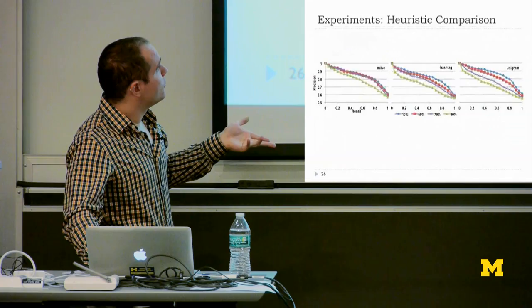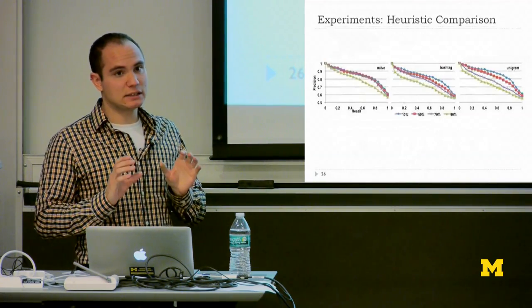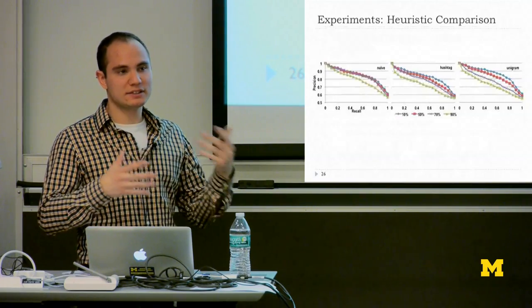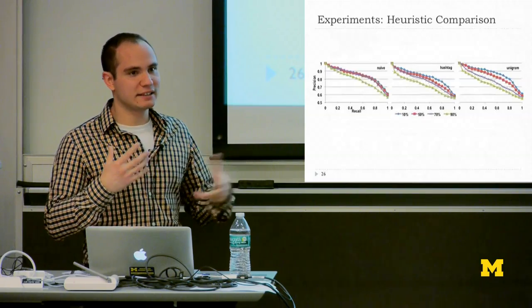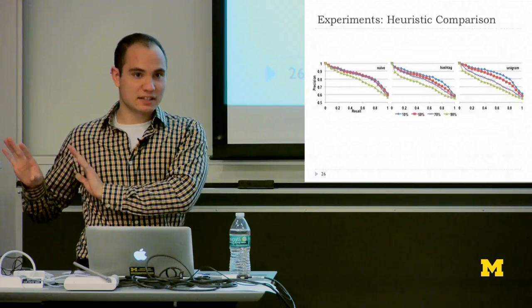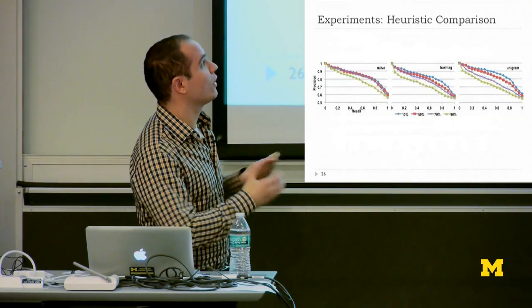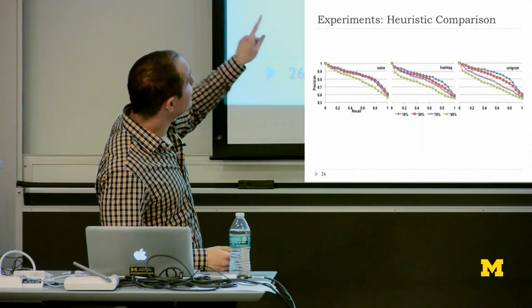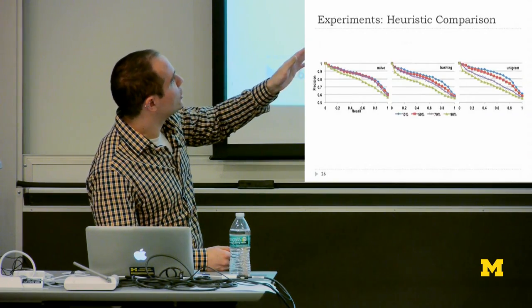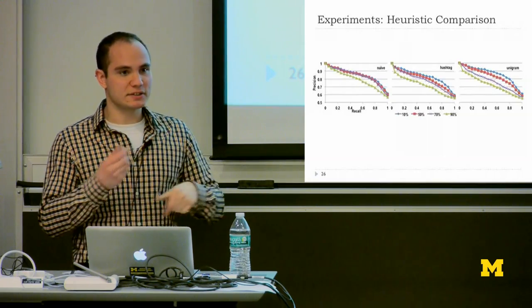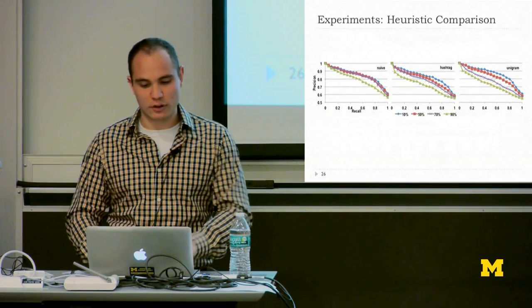We also tested how well the system works under noise, replacing users in a given organic list with random users to simulate noise from automatic list generation. The naive algorithm is very robust to noise — up to about 70% noise it performs nearly as well, and it's still acceptable at 90% noise. The hashtag and unigram methods get progressively worse with noise, because the heuristic of finding the top K unigrams or hashtags degrades as more content becomes irrelevant to the list topic.